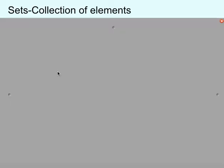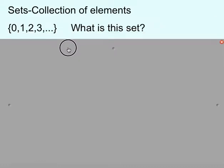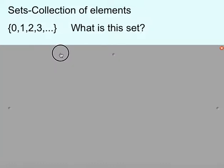Let's first talk about this idea of sets — that's just a collection of elements. An example is the curly brace notation: 0, 1, 2, 3, and so on. What is this set? If we're talking about 0, 1, 2, 3, and so on, we are actually talking about the whole numbers. Whole numbers are all of our positive integers plus 0.